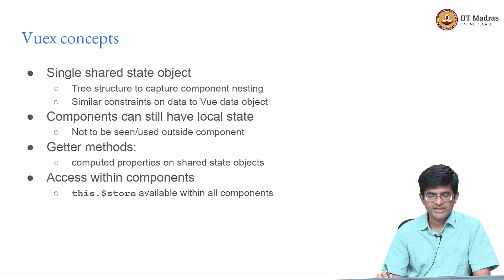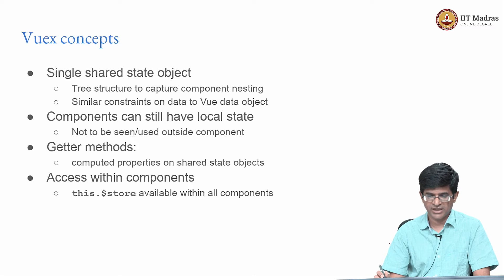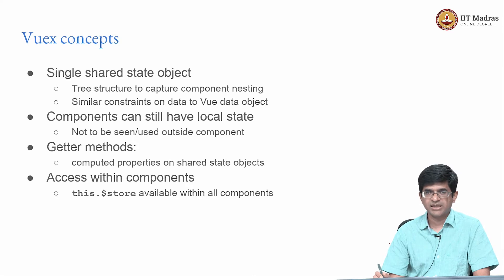A few of the concepts associated with Vuex: first, there is a single shared state object — it is a global variable shared across all the components. It has a tree structure, similar to the component nesting being a tree-like structure. Therefore, the state object also has a tree structure, sometimes called the shared state tree. In terms of what data can be present inside a shared state object, it is pretty much the same constraints as whatever you can have inside a Vue data object — what you could put inside Vue data, you can also have as a shared state object inside the Vuex framework.